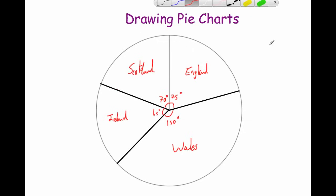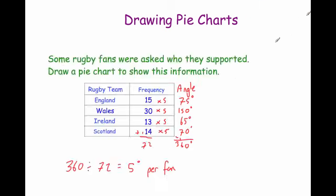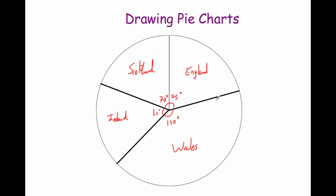And that's your pie chart. To summarise: first, find the total frequency from the question or by adding up the table. Then divide 360 by that total to get degrees per person. Multiply each frequency by that answer to get your angles. When drawing, work in pencil, put the cross of the protractor at the centre, line up the zero with the previously drawn line, and mark off each angle going around.